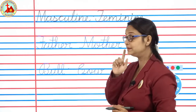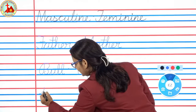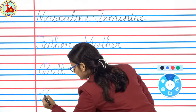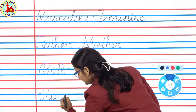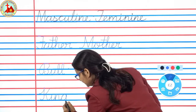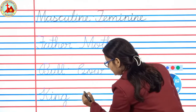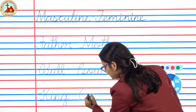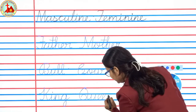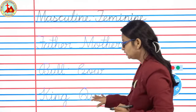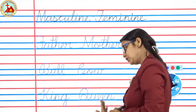One more example. King. K-I-N-G. King. Queen. Q-U-E-E-N. Queen. King, queen.